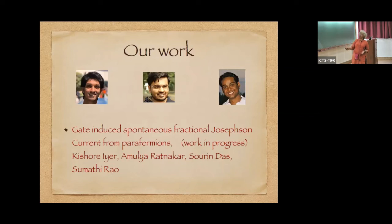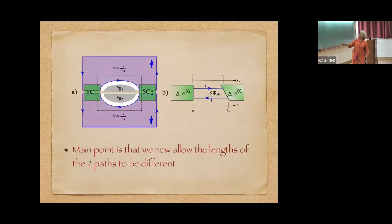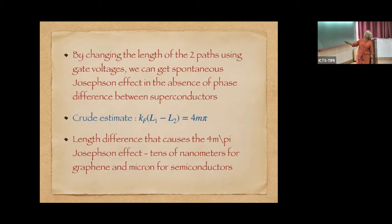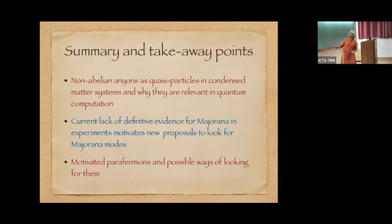And in this context, we have worked on gate-induced spontaneous fractional Josephson currents from parafermions. This is again work in progress with Sourin, a student Amulya and Aishwarya, who was a visiting student here who didn't actually come here but was on Skype. And the main point that we have now done is to allow for the lengths of the region between the two superconductors to be changed by using gating. And what we find is that by changing the lengths of the two parts using gate voltages, we can get spontaneous Josephson effect in the absence of the phase difference between superconductors. A very crude estimate for what kind of lengths are needed - we find that the length difference that causes the 4mπ Josephson effect, similar to the 4π Josephson effect for Majoranas, is tens of nanometers for graphene and microns for superconductors.